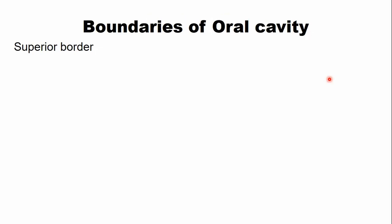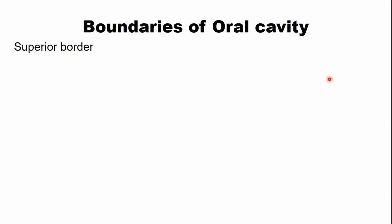Now the boundaries of the oral cavity: the superior border is formed by the hard and the soft palate. The anterior part is the hard palate, and posterior to that is the soft palate, which may not be visible in the clinical picture.